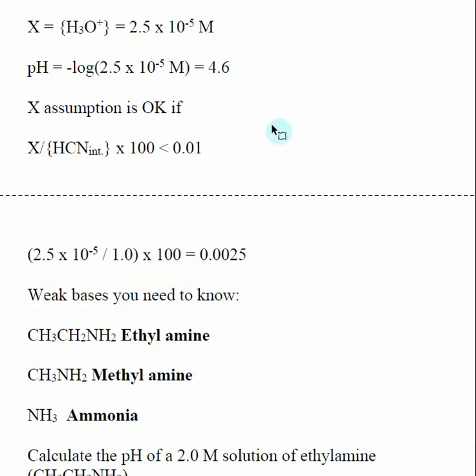So now what we want to do is to take a second and make sure that the assumption that we made, that X was small, is not going to have a significant effect on our calculations. So different textbooks have different equations for checking this assumption. And so this is the one that I'm going to use. You take the X value that you calculated in your question and divide that by the initial concentration of your weak acid. If you take that, do the division and then multiply by 100, if that number is less than 0.01, then the assumption that X was small was okay.